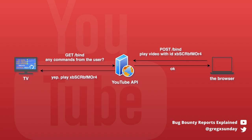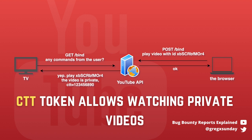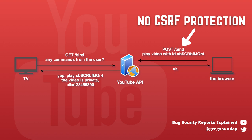You might think we can just change the ID of the video to a private one, but it's not that easy. When the video is private, the response from the launch API contains an additional parameter — a token that allows the TV to access the private video. The hunter did not identify any bugs on that side of the process. But there was a problem on the client side: the POST request to the bind endpoint had no CSRF protection at all.